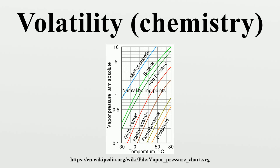For example, at any given temperature, methyl chloride has the highest vapor pressure of any of the liquids in the chart. It also has the lowest normal boiling point, which is where the vapor pressure curve of methyl chloride intersects the horizontal pressure line of one atmosphere of absolute vapor pressure.